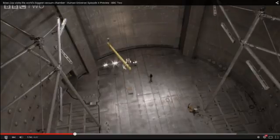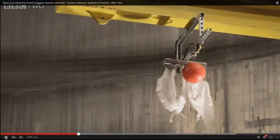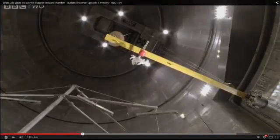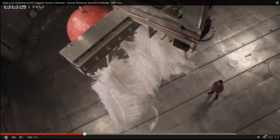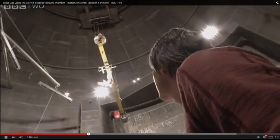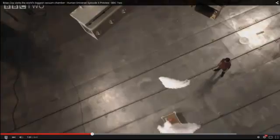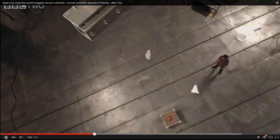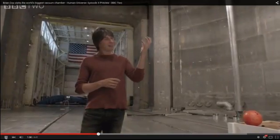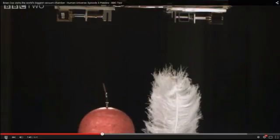Galileo's experiment was simple. He took a heavy object and a light one and dropped them at the same time to see which fell fastest. Now in this case, the feathers fell to the ground at a slower rate than the bowling ball because of air resistance.